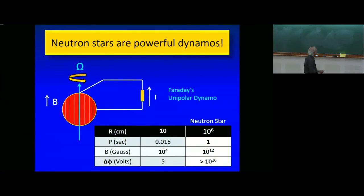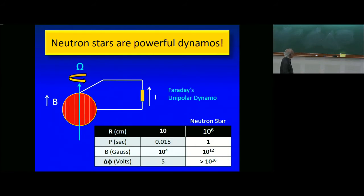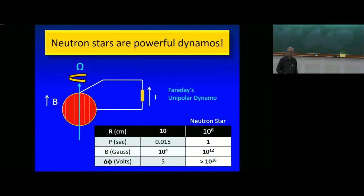The first dynamo that Faraday made was a uniformly magnetized sphere which was rotating. He discovered that if you rotate a sphere, voltage develops between different parts of the surface, and the maximum voltage by symmetry must be between the pole and the equator. If this sphere is 10 kilometers in radius, rotating at a period of 1 second, with a magnetic field of 10¹² Gauss, the voltage generated is in excess of 10¹⁶ volts. So you expect interesting things to happen.